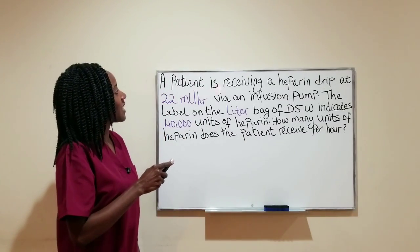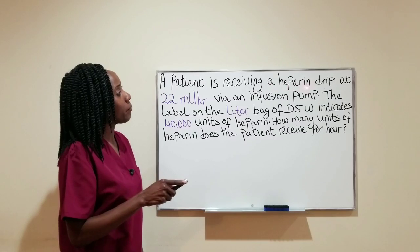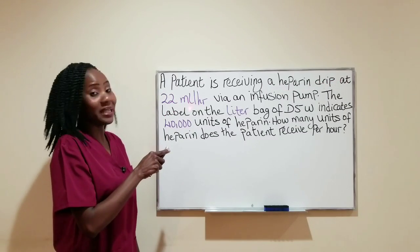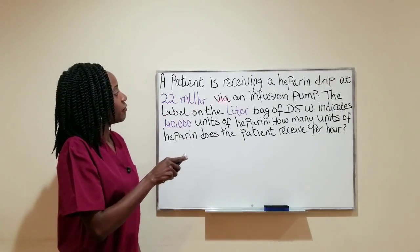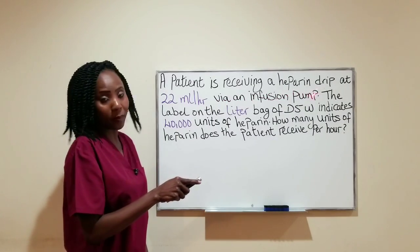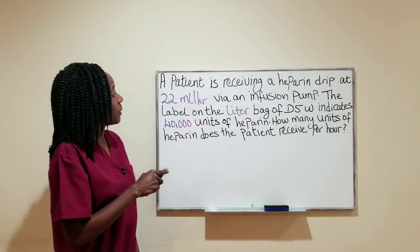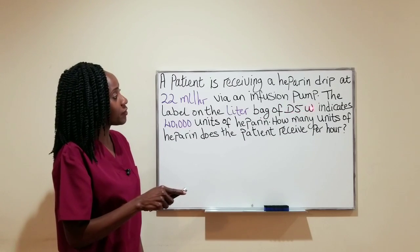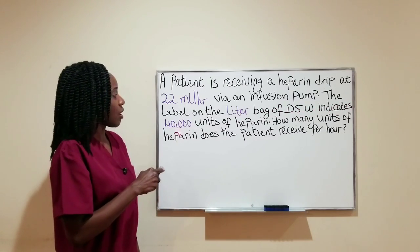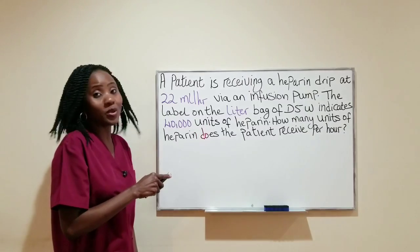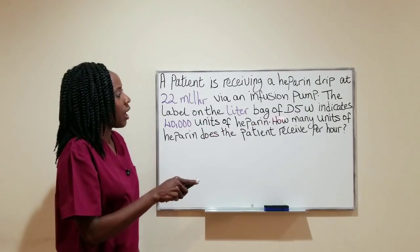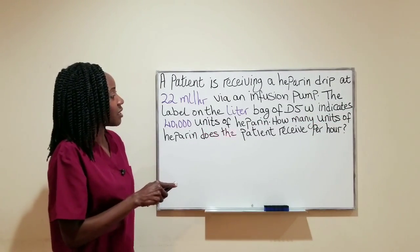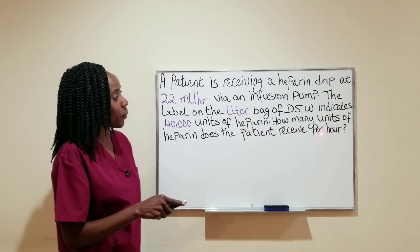A patient is receiving a heparin drip at 22 milliliters per hour via an infusion pump. The label on the liter bag of D5W indicates 40,000 units of heparin. How many units of heparin does the patient receive per hour?